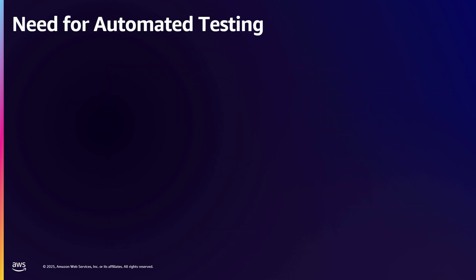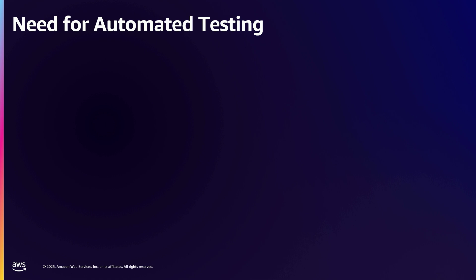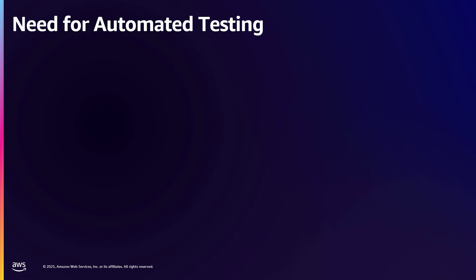I'm going to pass it to Vic. Thanks, Corey. Before we dive into the need for automated testing, think of a web application firewall rule that you've created and applied to your web application but is not tested. You know how it's configured, but until you test it with live traffic, there's no certainty how it's going to behave. It's the exact same case with guardrails. If a guardrail is not tested, it could be too permissive — allowing malicious prompts and causing business risks — or too restrictive, causing business interruption on your Gen AI applications.